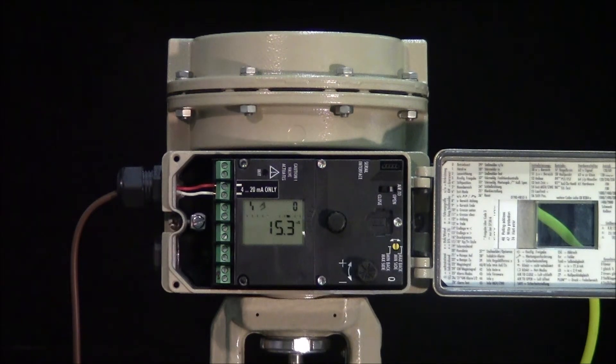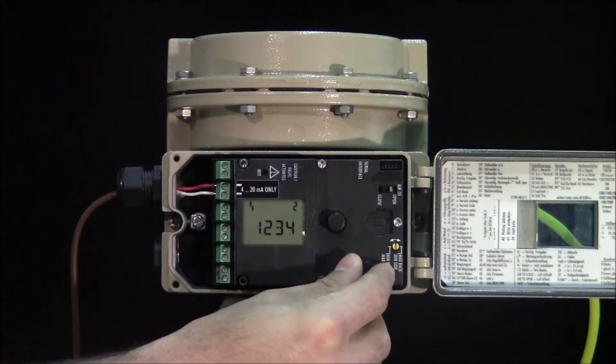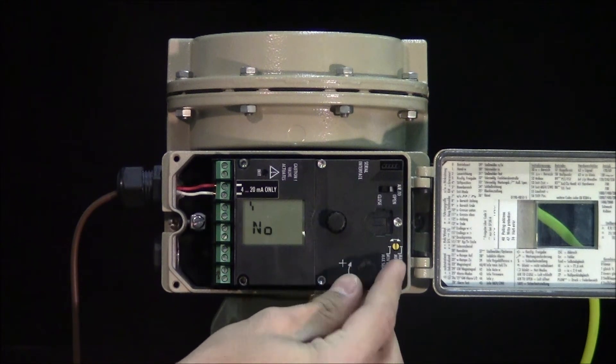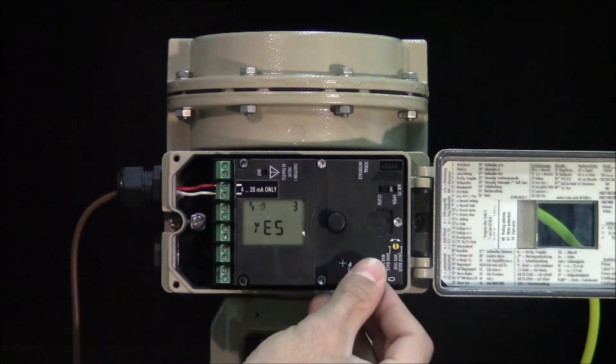To enter configuration mode, turn the rotary push button to parameter 3. Push and turn again until the display shows yes and push to accept the change.